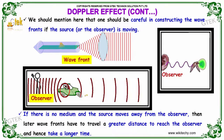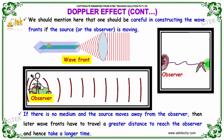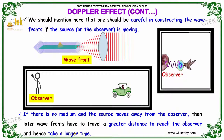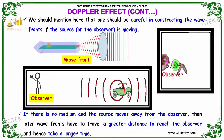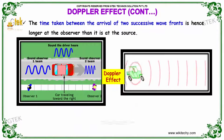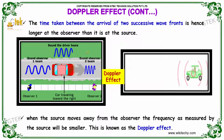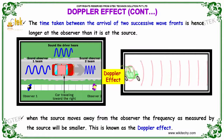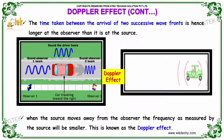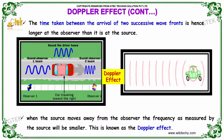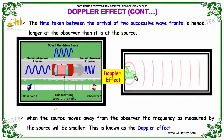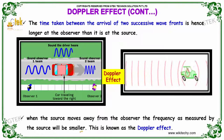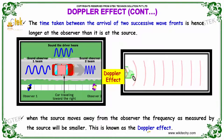If there is no medium and the source moves away from the observer, the later wave fronts have to travel a greater distance to reach the observer and hence it will take a longer time. The time taken between the arrival of two successive wave fronts is hence longer at the absorber than at the source. When the source moves away from the absorber, the frequency as measured by the source will be smaller. This is known as Doppler effect.